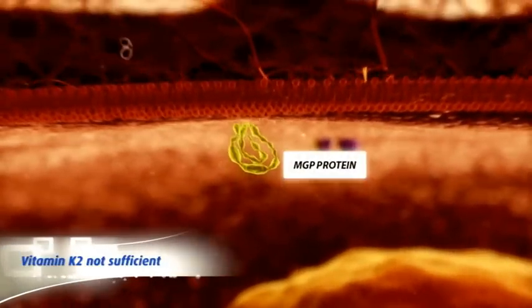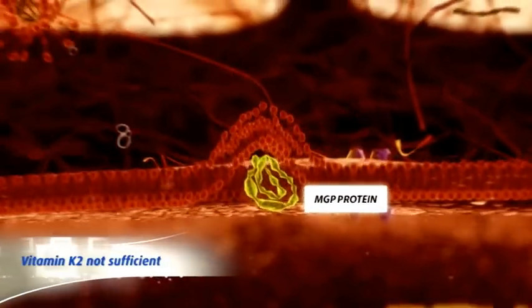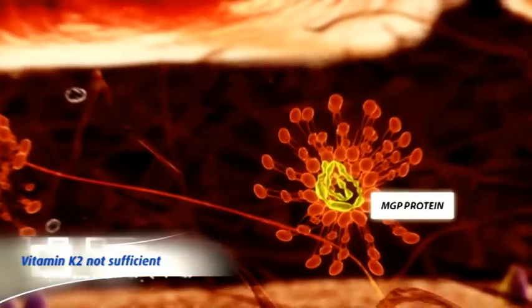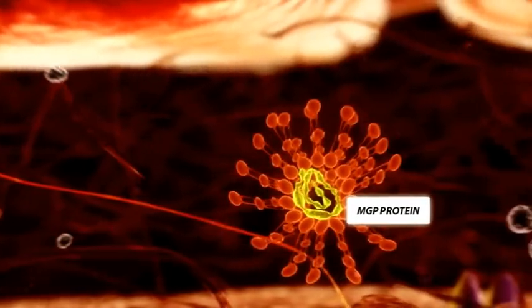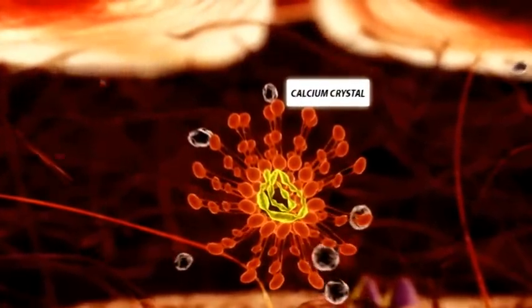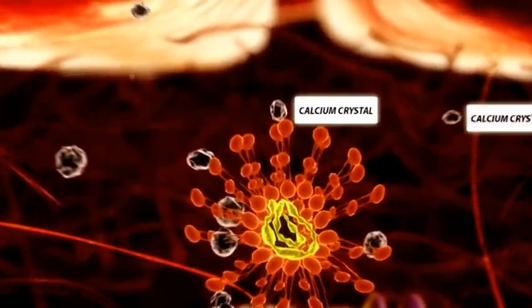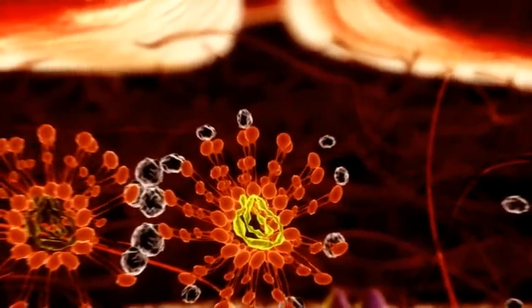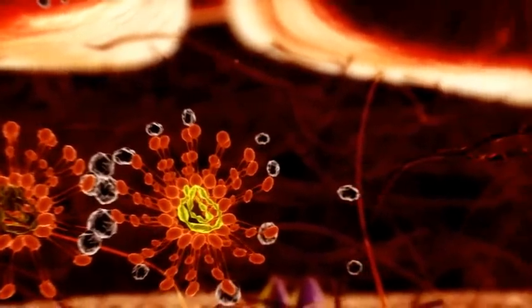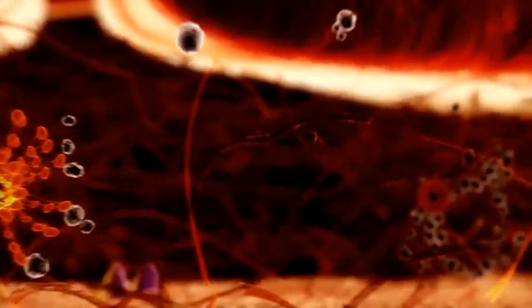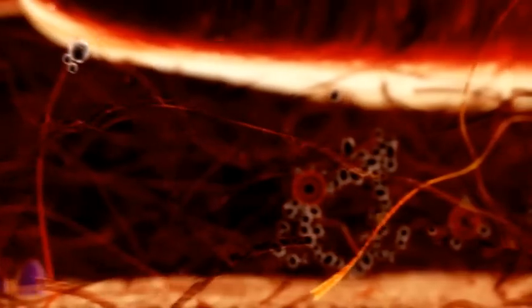In case there is not sufficient vitamin K in the vessel wall, part of the MGP remains inactive and is secreted by the vascular smooth muscle cells as a non-functional protein. This inactive MGP is not able to protect the shedding membrane particles. Calcium and phosphate can nucleate to calcium crystals in these cell membranes and form the first nidus of vascular calcification.